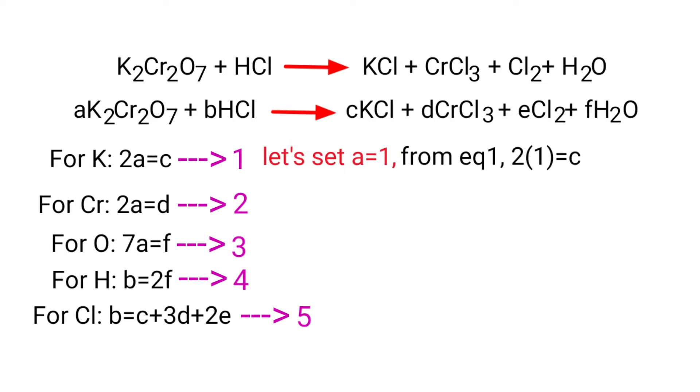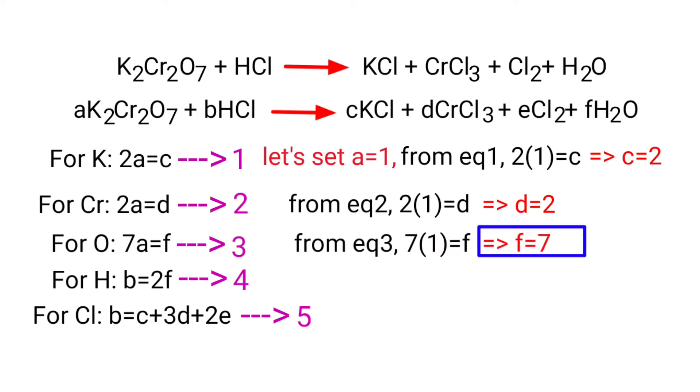From equation 1, 2 into 1 equals c, so c equals 2. From equation 2, 2 into 1 equals d, so d equals 2. From equation 3, 7 into 1 equals f, so f equals 7. Now apply the f value in equation 4. Then b equals 2 into 7, so b equals 14.